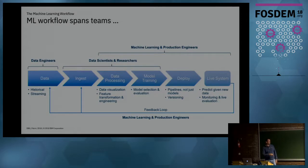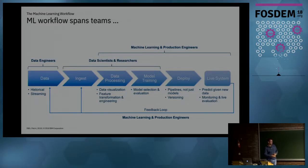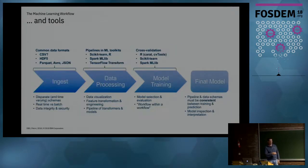Your training pipeline needs to communicate with your production system about versioning issues. Once it's in production, the real-world system needs to predict on new data, but it also needs to monitor, do live evaluation, know if things are going wrong, determine if the model needs retraining, and feed that feedback back into historical and streaming data at the beginning. This workflow is really a loop that spans teams as well as tools.